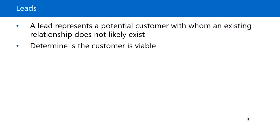A key element of working with leads and determining that viability, or the qualification process, requires some level of follow-up to determine if that person's needs align with what the salesperson and the organization can deliver. For example, if a salesperson meets someone at a trade show and receives their business card, they might not know if this person is a viable customer or not. It's only after the salesperson has called on the person or followed up in some way that they can determine if this person's needs align with what the organization can deliver.